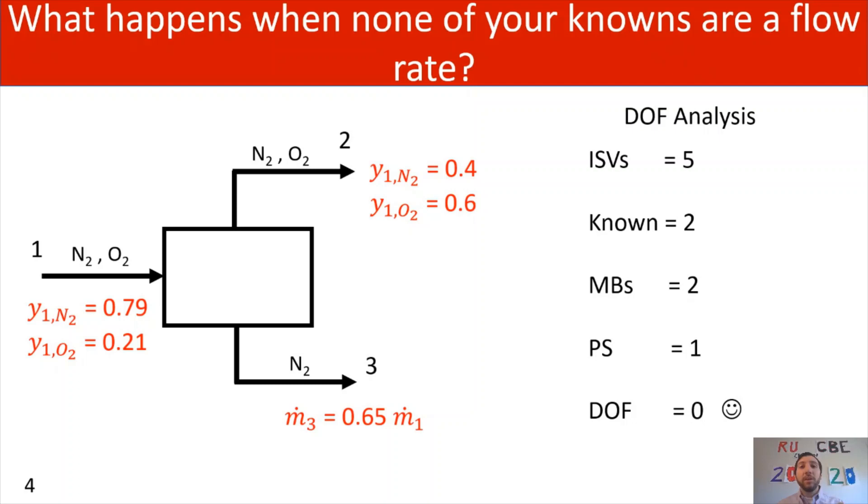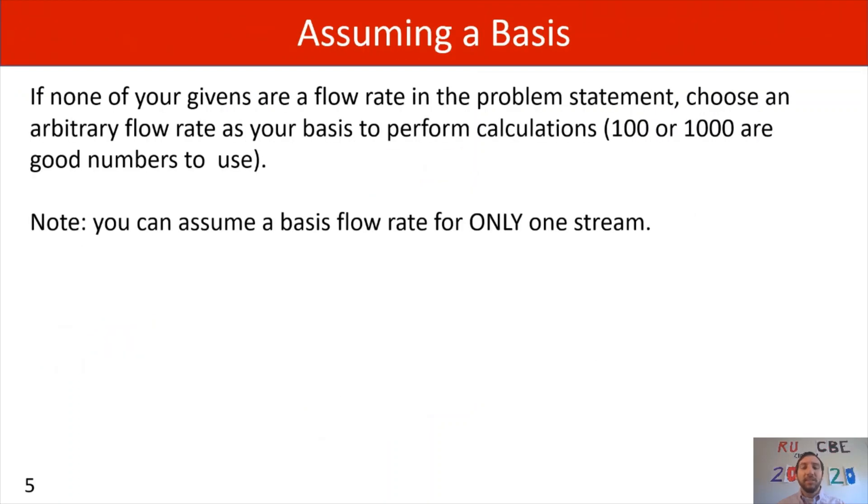So that's where we're going to do something called assuming a basis, which is what we had been doing for our average molecular weight. And it's a similar idea here, where if we have no given flow rates in our problem statement, we're going to choose an arbitrary flow rate as our basis to perform our calculations. And as same deal for our average molecular weights, what we're going to do here is we're going to use 100 or 1,000, most likely. Those are good numbers to use. Just because they're convenient, keeps everything nice and simple.